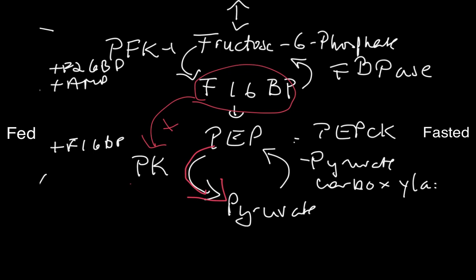In gluconeogenesis in the fasted state, to go back up to glucose, you need two enzymes to get around that pyruvate kinase step. The first enzyme is pyruvate carboxylase. The second enzyme is PEPCK.